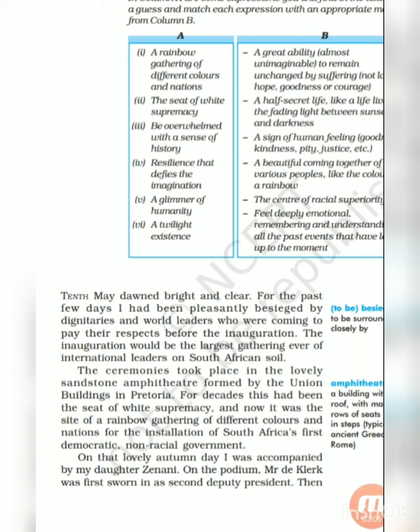It was the site for the installation of South Africa's first democratic, non-racial government. This area had been the seat of white supremacy for almost three decades, but this was the first time it was a rainbow gathering — a beautiful coming together of various people, like the colors in a rainbow. It was a truly proud and honorable moment for all black Africans.